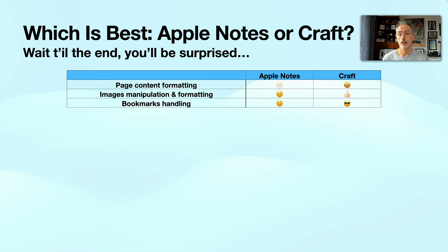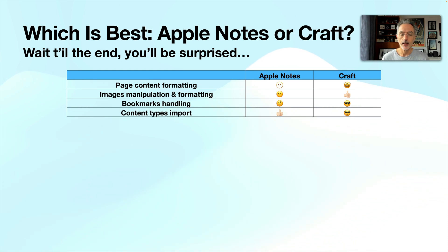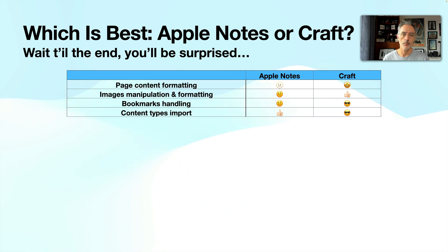Bookmark handling is way better in Kraft because you have a preview for each bookmark, something we cannot have in Apple Notes. For content types and import options, I would give an edge to Kraft, where you can import videos, images, markdown files, and things like that. Kraft is winning here as well. Markdown support: you can write in markdown format using Kraft, but you cannot do that in Apple Notes.